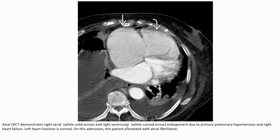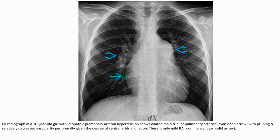On non-contrast CT, the image demonstrates right atrial enlargement. The solid arrow indicates the right atrium and the curved arrow indicates enlargement due to primary pulmonary hypertension. The patient presented with atrial fibrillation. A chest radiograph from a 10-year-old with pulmonary arterial hypertension shows dilation of the main and hilar pulmonary arteries with pruning and relatively decreased vascularity peripherally due to central arterial dilatation.